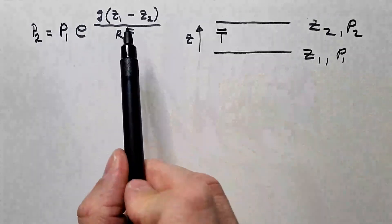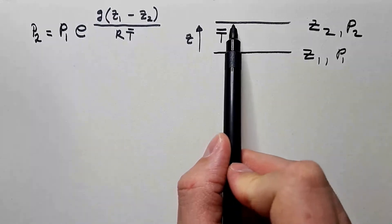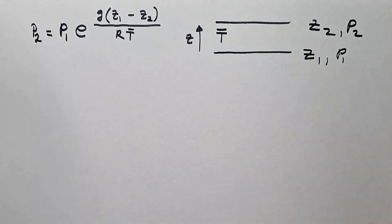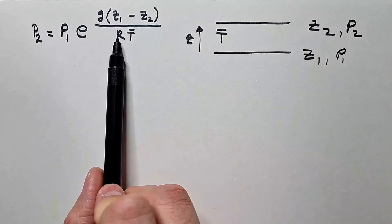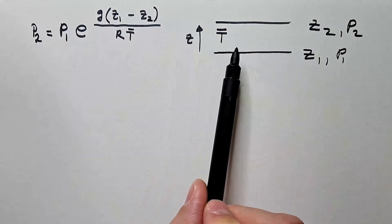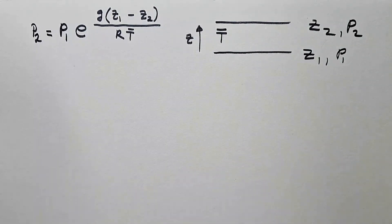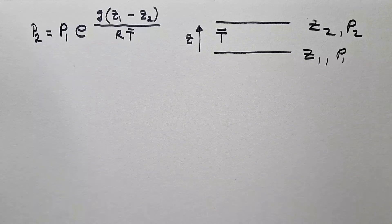Here is pressure P1 and here is pressure P2. T average is the average temperature in the layer between Z1 and Z2 and R and G are constants. R is the ideal gas constant for dry air, so we are assuming that this air is completely dry, there is no water vapor.